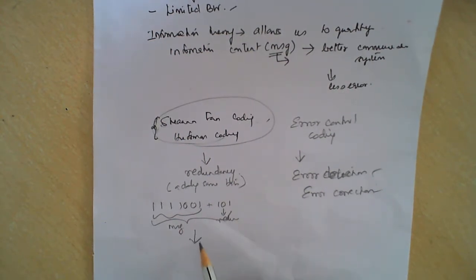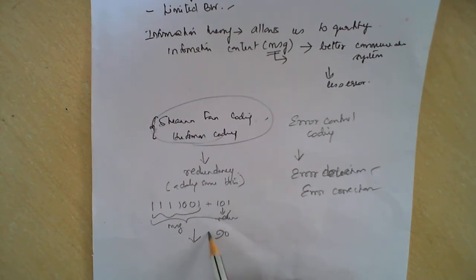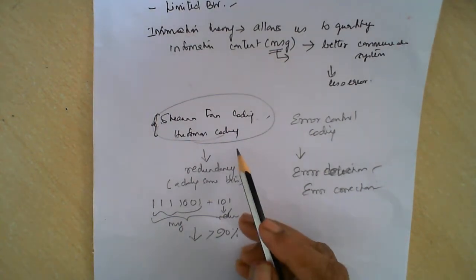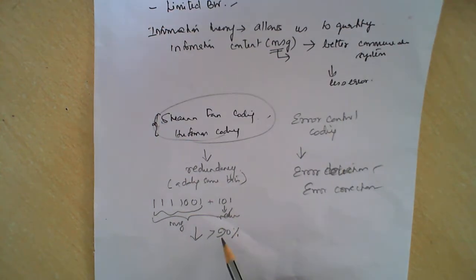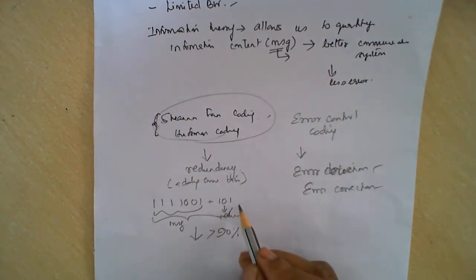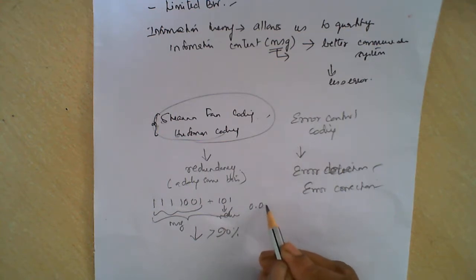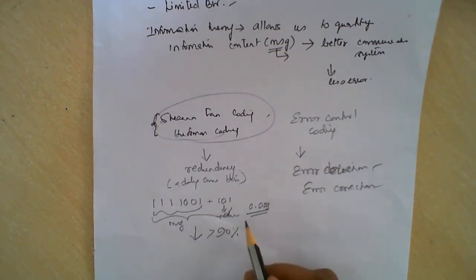When we consider performance, it should be greater than or equal to 90%, as we have seen in Shannon-Fano and Huffman coding. And this redundancy should be much less — it should be in the value of around 0.03 — so that it has a minimal number of errors.